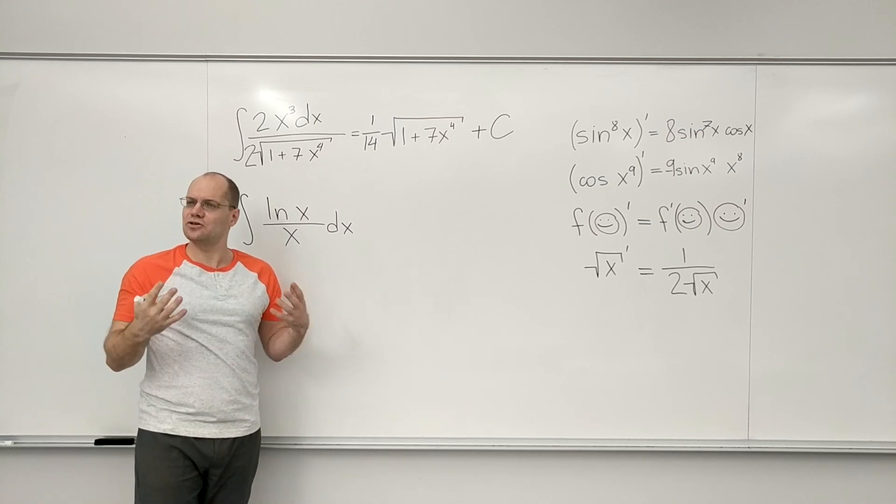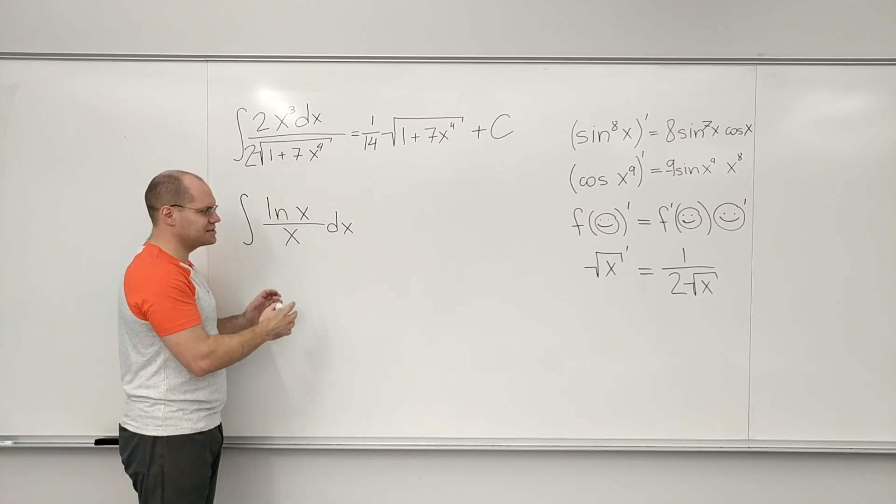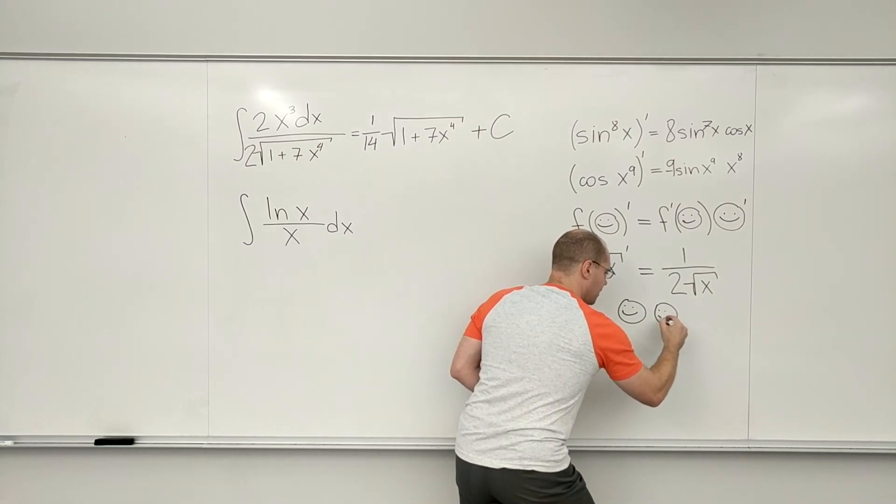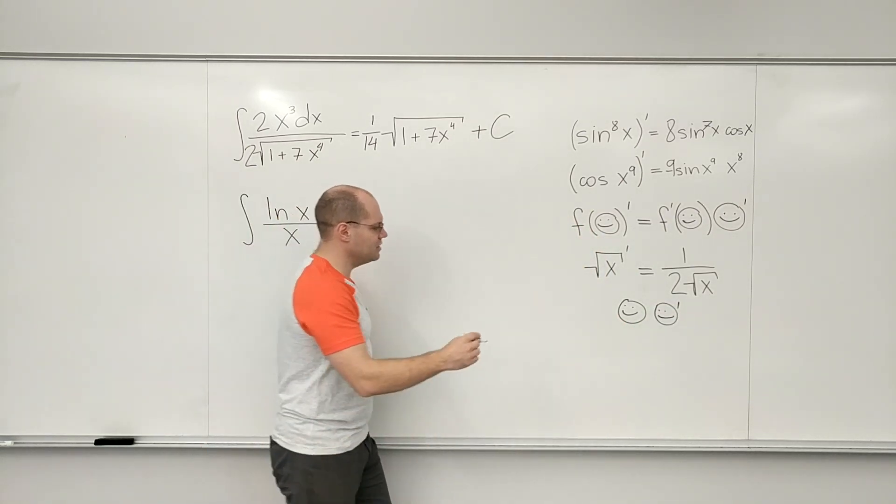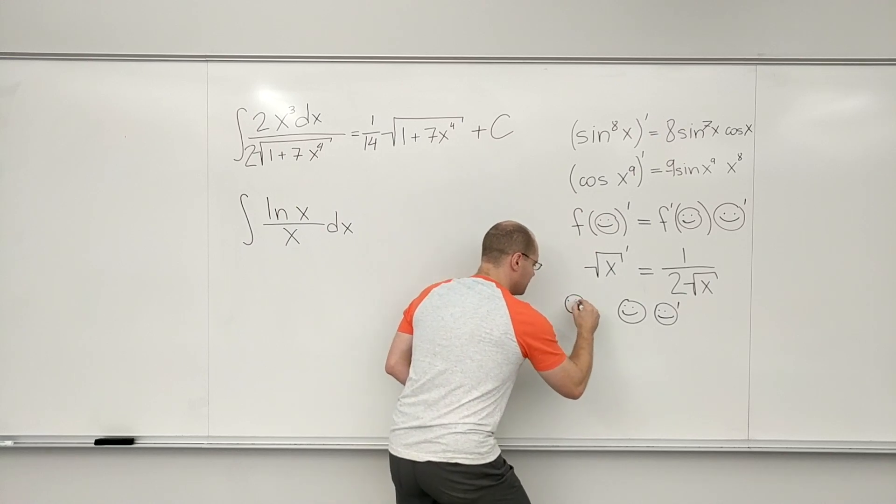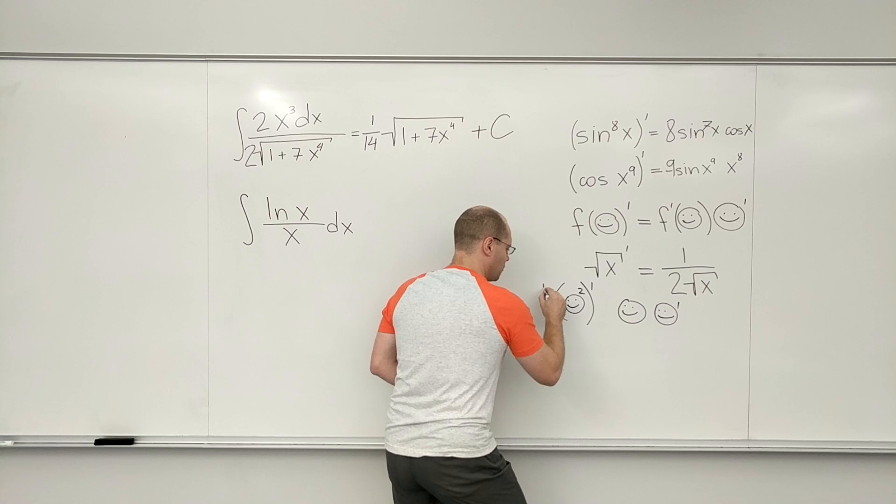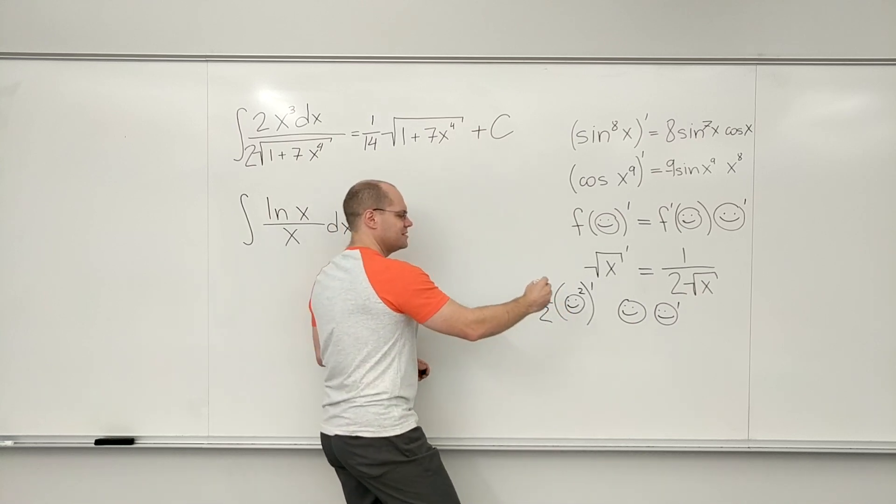To be quite frank, I don't know how to justify it, but when I see something times the derivative of something, I know that it came from that something squared with a one-half. Does that make sense?